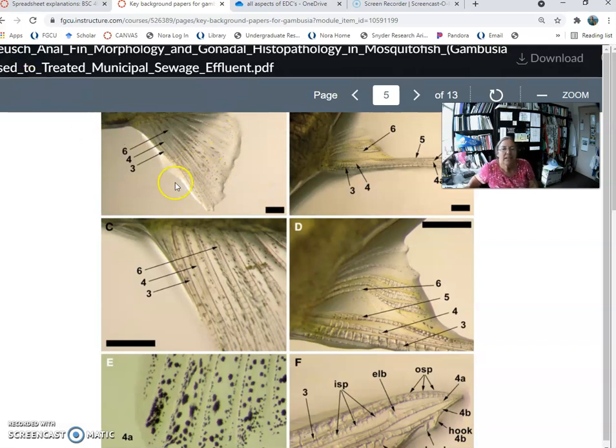So this is a female anal fin, and these are the rays. So 1 and 2 are very small. 3 is going to be the first long one that you see. Next to that is 4. 5 they didn't mark in this one. And then there's anal fin ray 6.